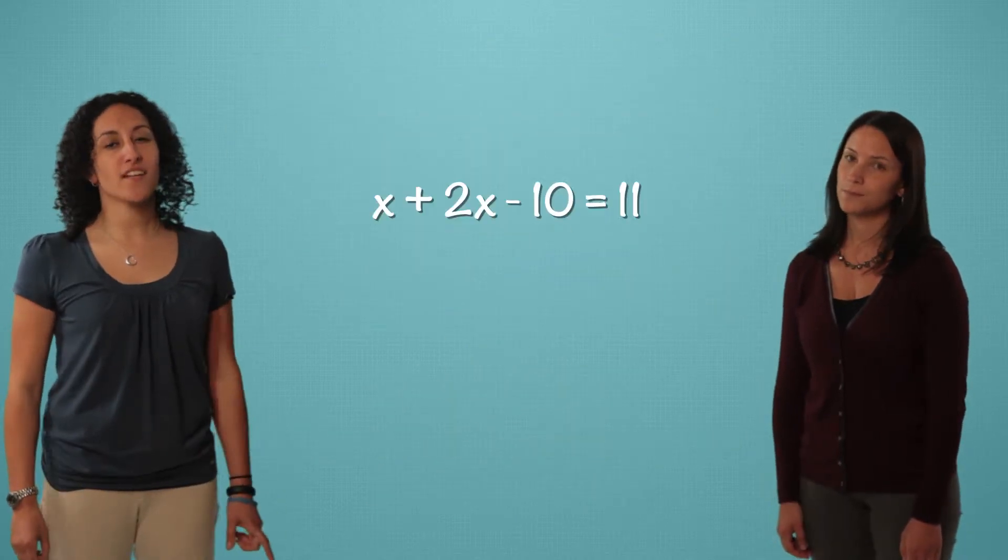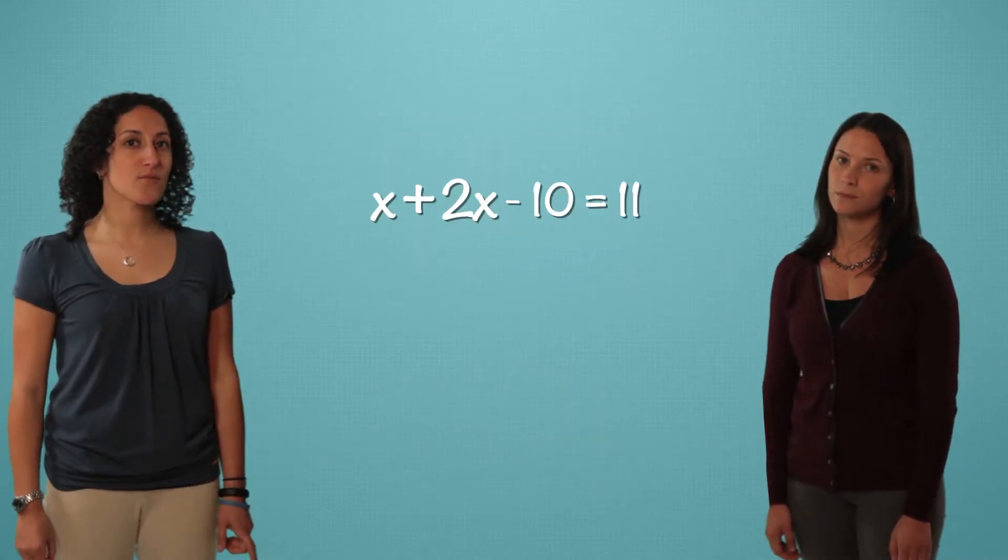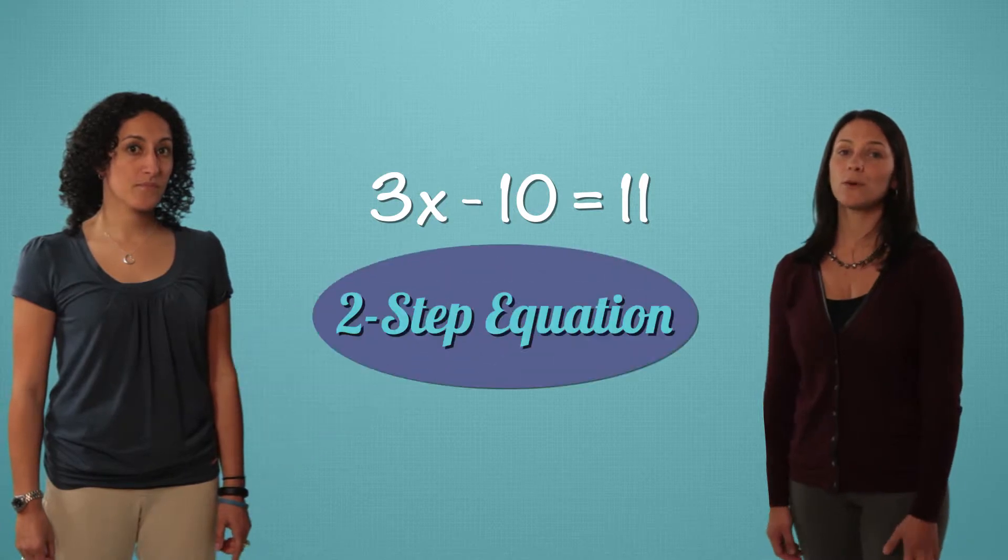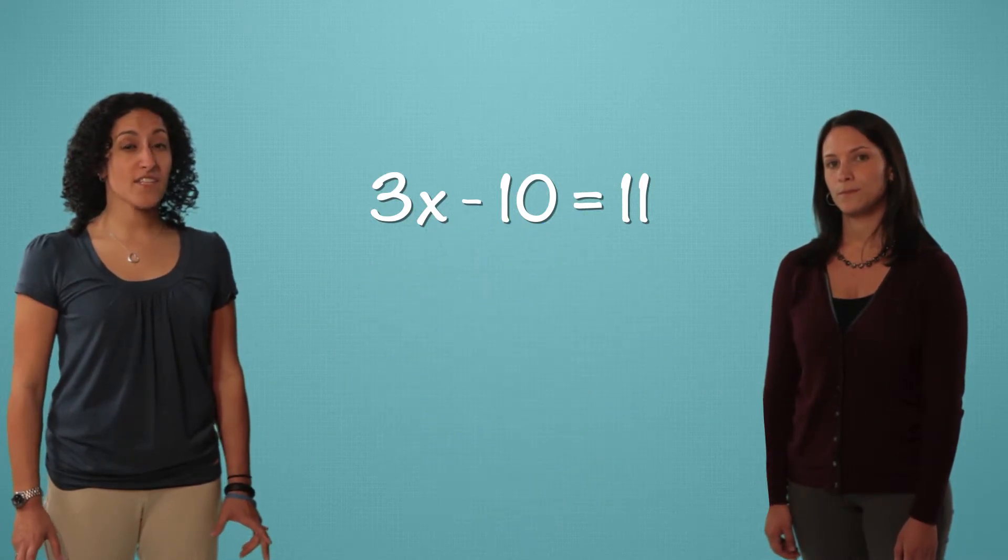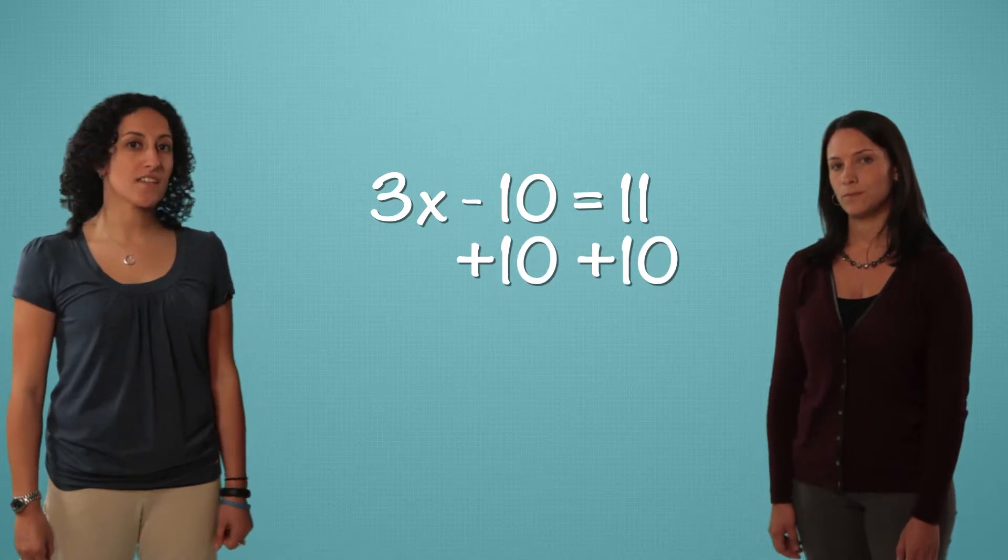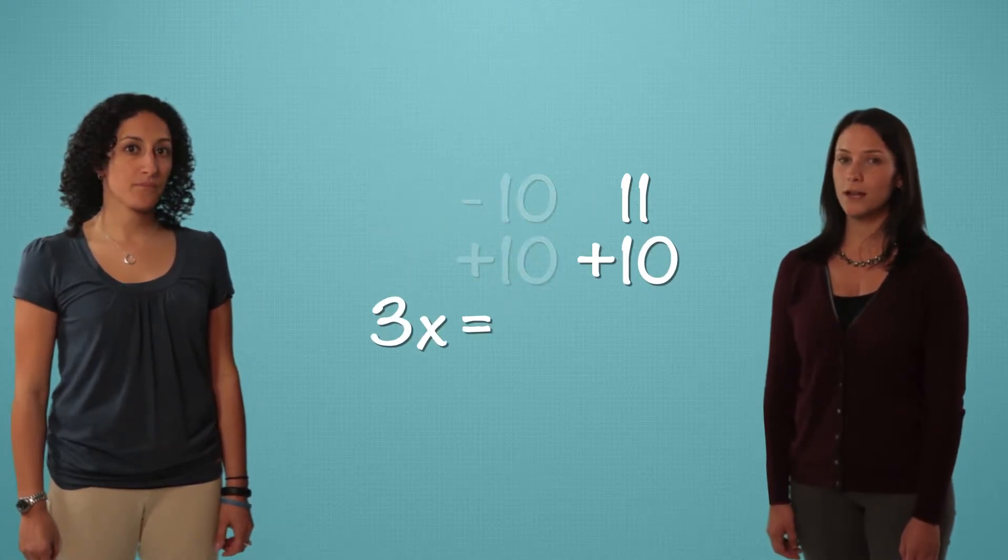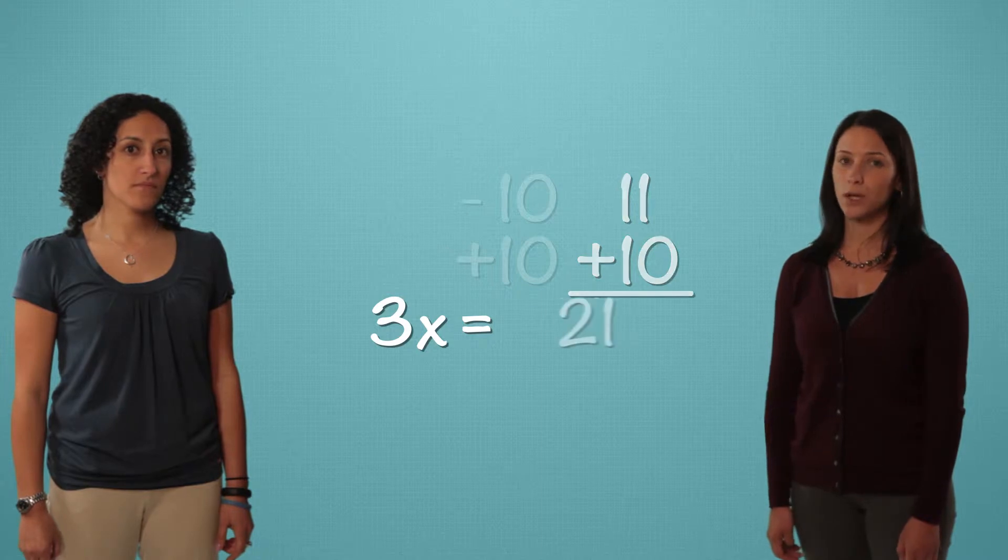Great! We combine like terms. x plus 2x equals 3x. And we're back to a two-step equation. So deal with the lonely number first. To clear negative 10, we add 10 to both sides. Bring down this 3x, bring down the equal sign, and then 11 plus 10 equals 21.